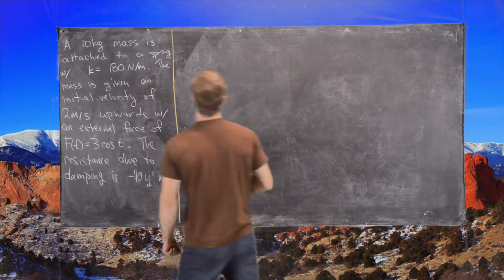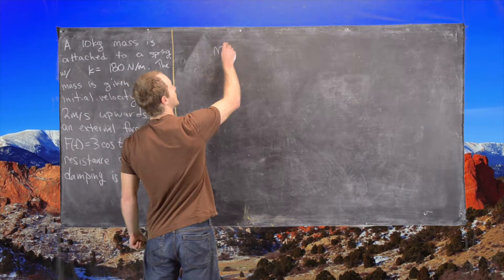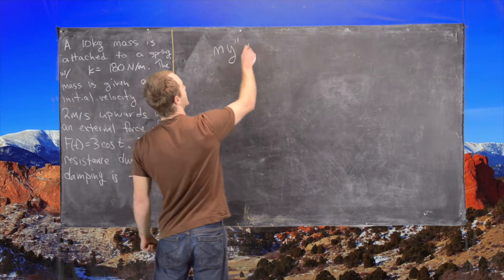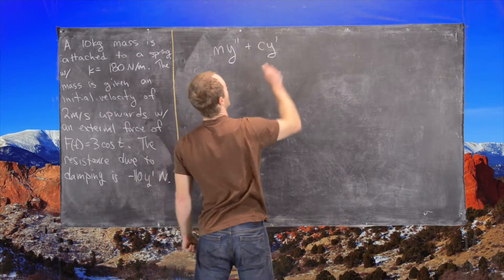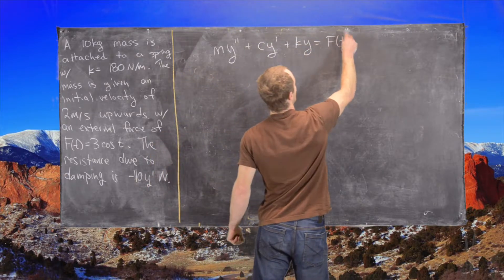So let's recall that the general form of this differential equation is given as follows. So m y double prime plus c y prime plus k y equals f of t. Where we have the parts here,